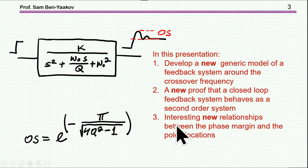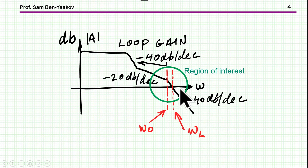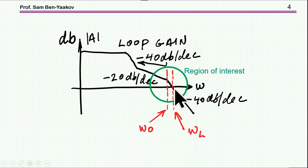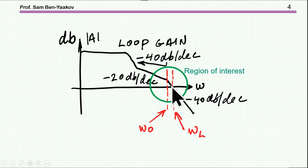I'm also going to show some interesting new relationships between the phase margin and the pole location. Here is the problem: we have the loop gain of a system, and the critical point is the crossover frequency. I'm showing a case with a slope of minus 20 dB per decade, and then a slope of minus 40 dB per decade — that is, we have a first-order pole here. The phase margin will be smaller than 45 degrees in this case if we are beyond the pole.